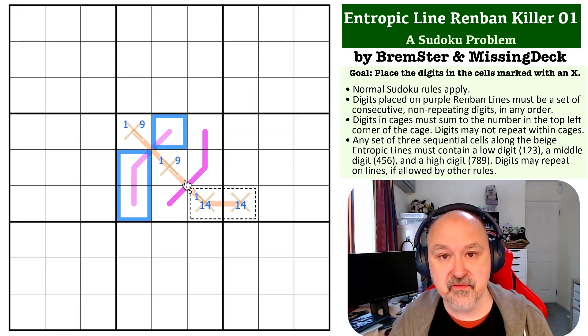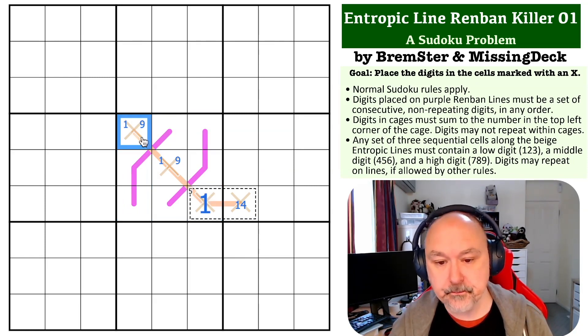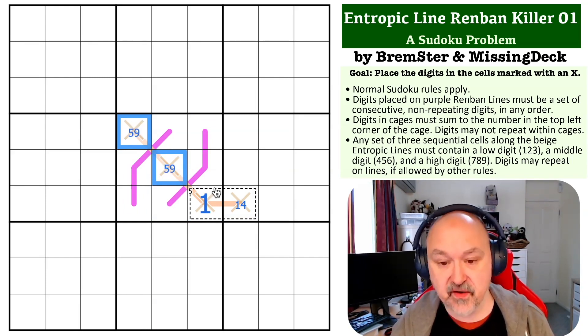So 2, 3, and 4 is one of these, and 8, 7, 6 is the other. So we know this is the 1. The digit we haven't put on a Renban line is 9 and 5. So this becomes a 5, 9 pair.